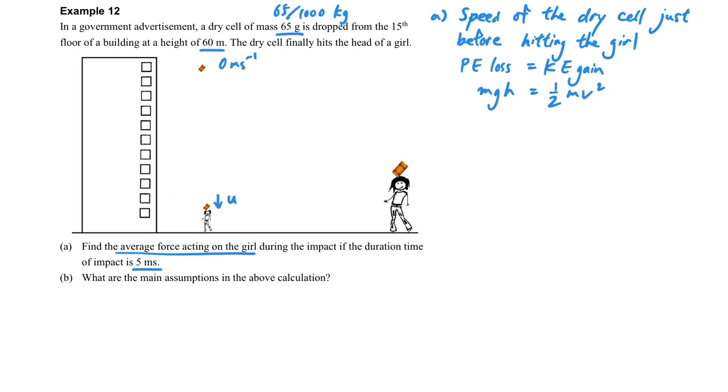A very standard situation of a free fall motion. So we can also remove the M, because the M is the same on both sides. By using this equation, we can find out the speed that just hits the girl.